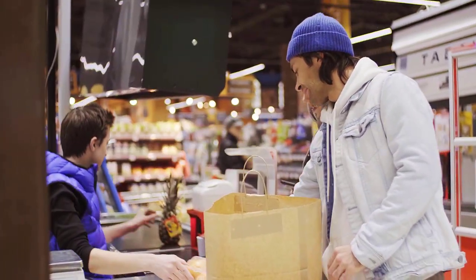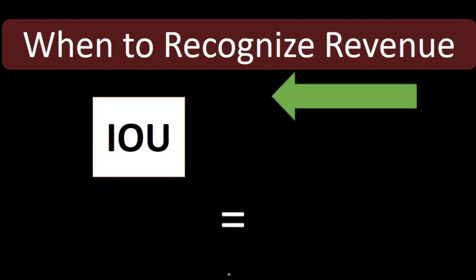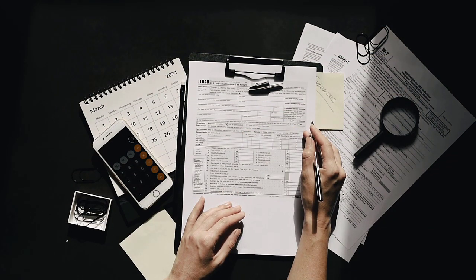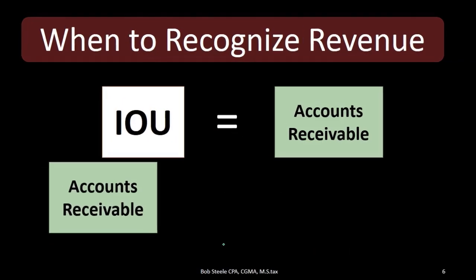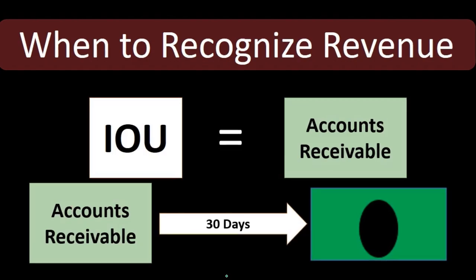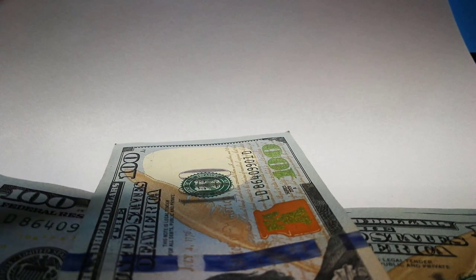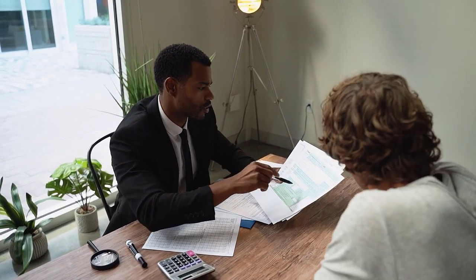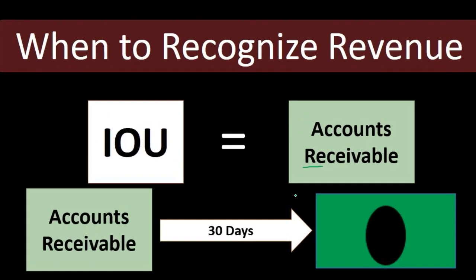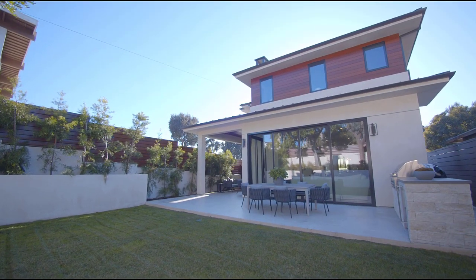That IOU is something of value to the owner and is going to be equivalent to accounts receivable. Accounts receivable is an account tracking IOUs for work that has been done but for which cash has not yet been received. The accounts receivable will hopefully be collectible within a normal time period — perhaps 30 to 60 days — at which point they are converted to cash. The accounts receivable is not the same as cash, but it is still an asset.